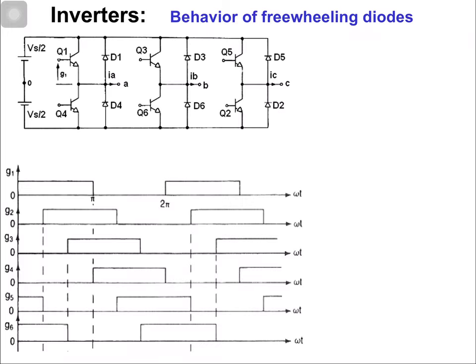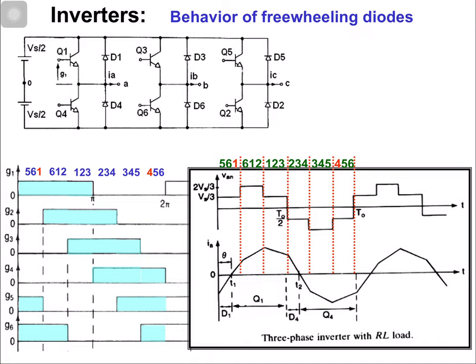We have already discussed the waveforms for the 180 degree conduction inverter for Y connected and delta connected load, using the same circuit, gating signals, and switching sequence. Now let's look at the voltage and current waveforms for the inductive load. The current will lag behind the voltage. This is the phase voltage waveform with (1/3)Vs, (2/3)Vs levels — that is -(1/3)Vs, -(2/3)Vs and so on.